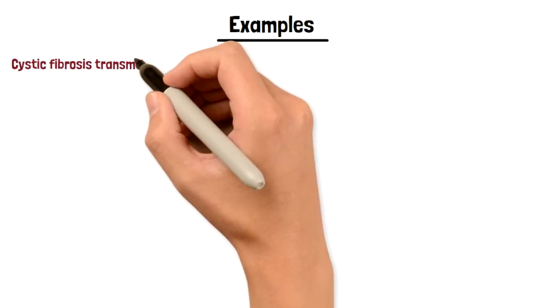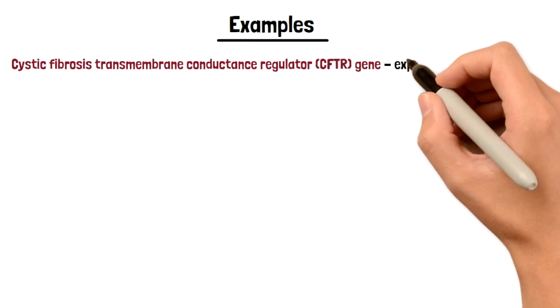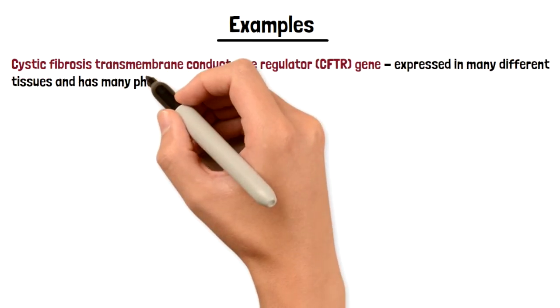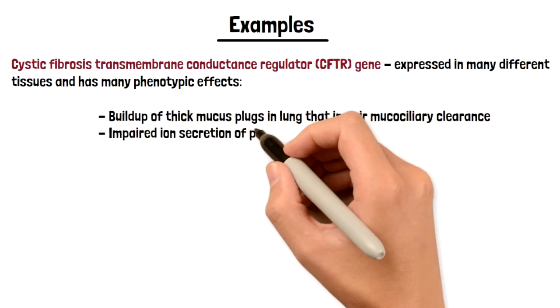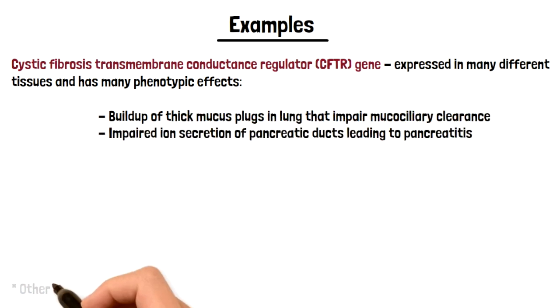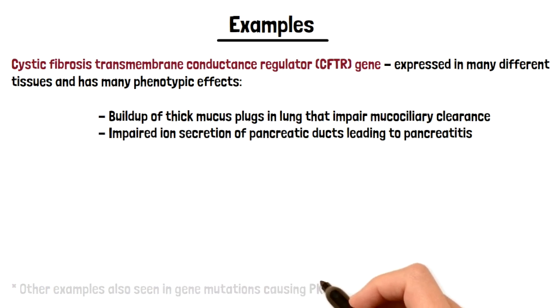One common example of pleiotropy is seen in cystic fibrosis disease. In cystic fibrosis, whereby the transmembrane regulator, which is a chloride channel, is mutated, the ability to balance chloride ions is severely impaired.